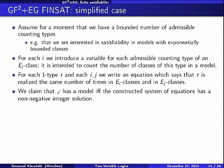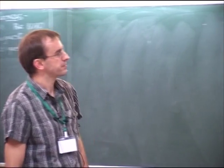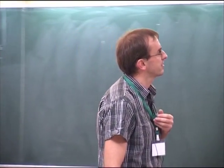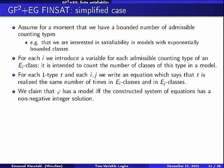We construct a system of equations. For each admissible counting type for E_i classes, we introduce a variable — an unknown. We have unknowns for E_1 classes, unknowns for E_2 classes, and so on. What our equations say is an obvious thing that must be satisfied in every model: for each one-type T and each pair of equivalence relations E_i, E_j, this type is realized exactly the same number of times in E_i-classes and in E_j-classes. This is obvious because every element is a member of an E_i-class and a member of an E_j-class. We claim this is an if-and-only-if condition: phi has a model if and only if the constructed system of equations has a non-negative integer solution.